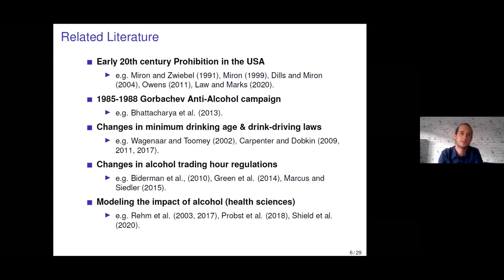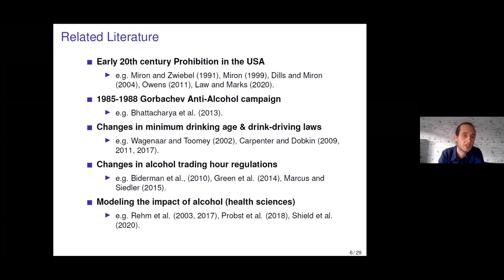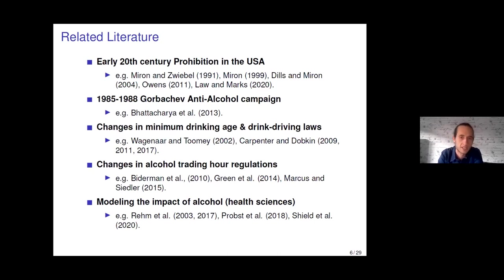This paper relates to a large literature examining the impact of alcohol in society. There's a sub-literature looking at the impact of the absence of alcohol during Prohibition in the US in the early 20th century. There's a very interesting piece by Patacharya Atal examining the Gorbachev anti-alcohol campaign during the 1980s. There's also lots of work that looks at shifts in laws — for example, changes in the minimum drinking age or drink driving laws — and individuals use this exogenous variation to examine impacts on outcomes such as sexual behavior, car crashes, and mortality.